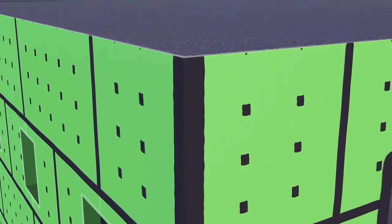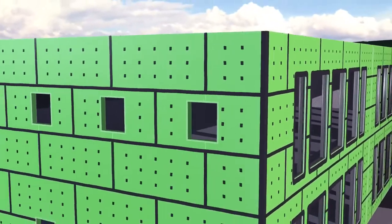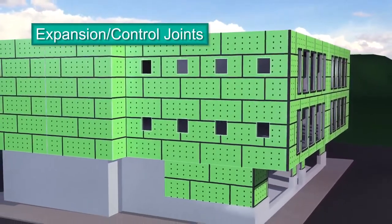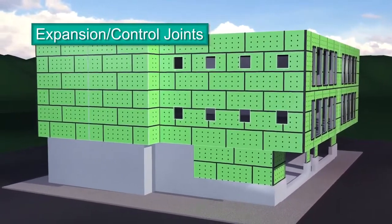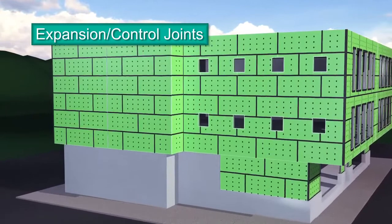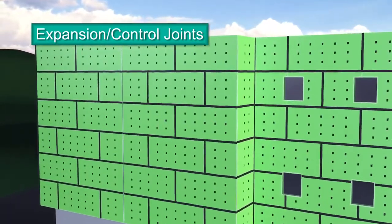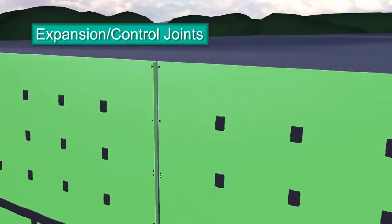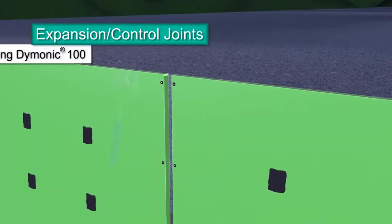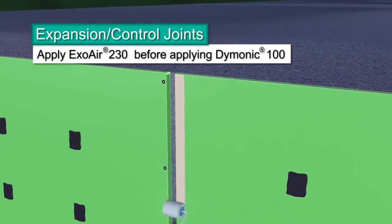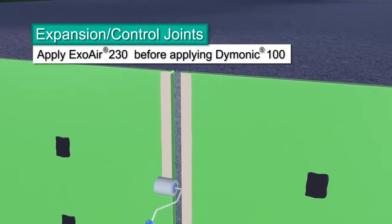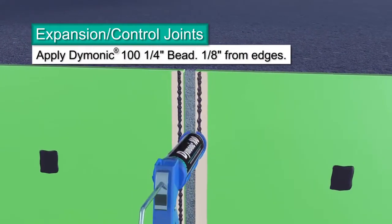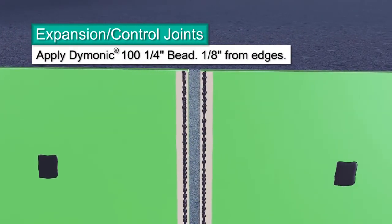Expansion joints accommodate inevitable building movement. They're designed to absorb the expansion and contraction of construction materials. Expansion joints have to be detailed because, just like detailing standard board joints, it is required for continuity of the air barrier system. Using a standard caulk gun, apply a 1/4 inch bead of Dimonic 100, the approved sealant for detailing panels, to each side of the joint.